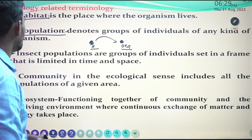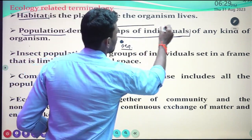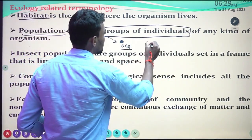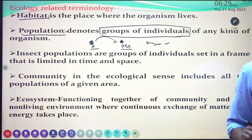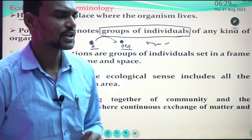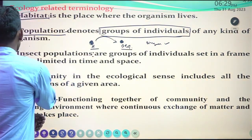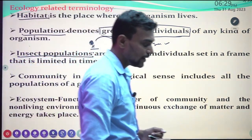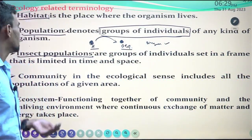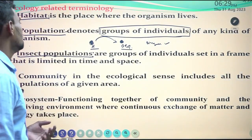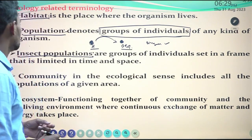Population includes a group of individuals — a single insect, single species, or single organism. It is only related to what the population actually contains. Insect population, because we are handling entomology, includes only insects: the individuals set in a frame limited to time and space.